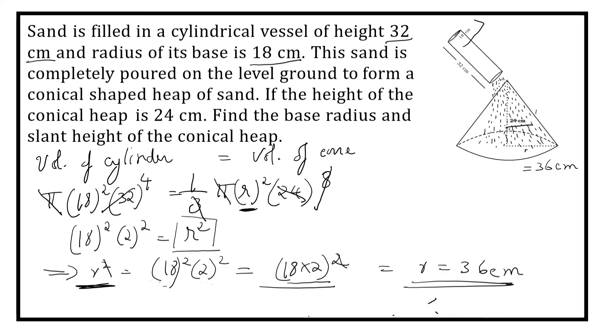Now let us find the slant height. From the figure, we can say that this is a right angle triangle. Here L, slant height, is hypotenuse. So L square is equal to H square plus R square. So L is equal to square root of H square plus R square.